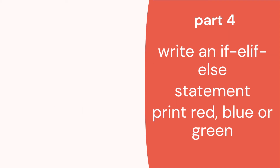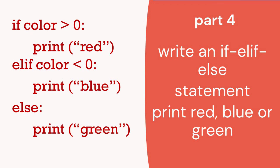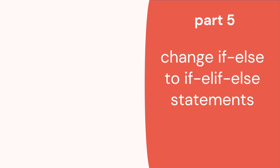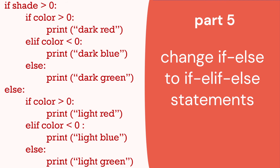Part four: write an if and if-else statement. Now we add the color green. If color is greater than zero, print red; if another condition, print blue; else print green. We want to change the if-else to an if and if-else in our main code. So: if shade is greater than zero, meaning they're dark — if color greater than zero: dark red, less than zero: dark blue, else: dark green. The same code at the bottom gives us light variants. That's how we determine which of the six colors — dark or light, red, blue, or green — and how we might indent and nest code inside other statements.